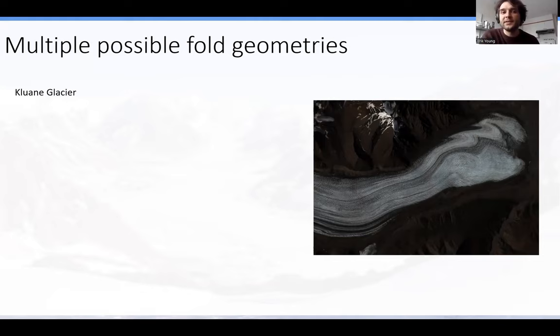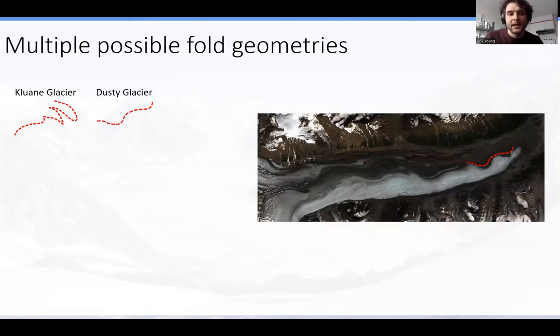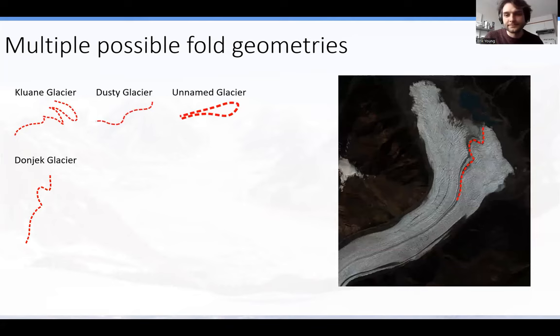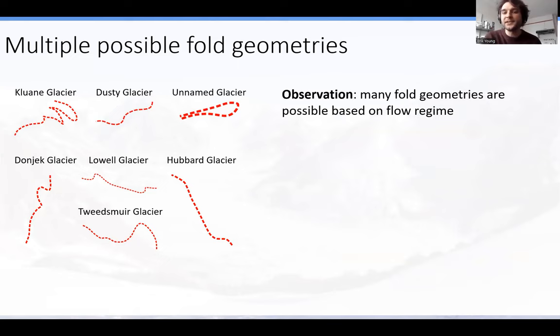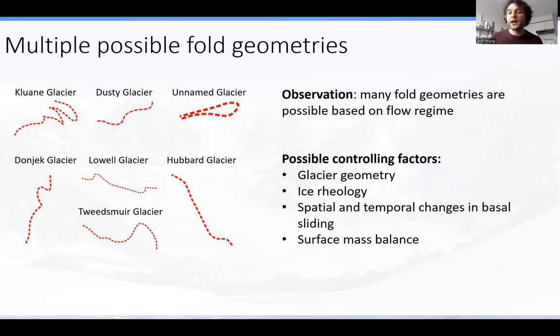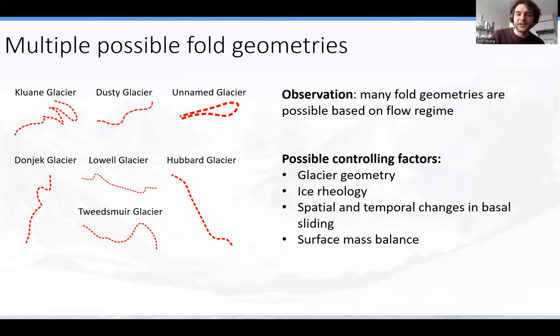Why do we care about folding in surge-type glaciers? I'm going to highlight the folds on the surfaces of several surge-type glaciers in red, like I've done here for the Kalani Glacier and the Dusty Glacier. The key takeaway is that there are many different fold geometries, varying based on different flow regimes controlled by parameters including valley geometry, ice rheology, basal conditions throughout the surge cycle, and surface mass balance — which is the link between the glacier and the regional climate controlling its mass budget.